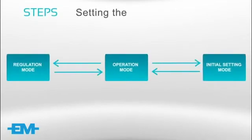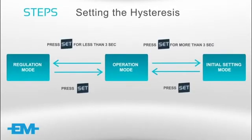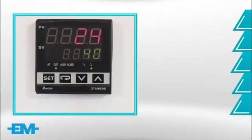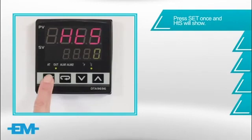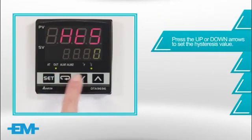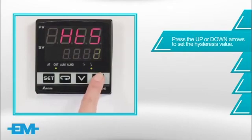The hysteresis is set in regulation mode. To set the heating hysteresis, press set once to enter the regulation mode and HTS will show. Press the up or down arrows to set the desired hysteresis.